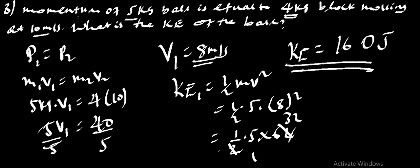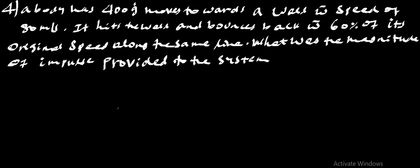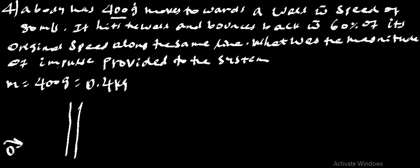Question number 4. A ball has this much mass. The mass of the ball is equal to 400 grams, which is equal to 0.4 kg. The kilograms moves toward the wall. Let's say this is the wall. The wall moves around the corner with a speed of 80 m per second.